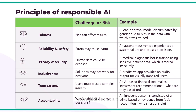Last but not least, we have accountability. When something goes wrong in AI systems, who is liable? For example, if an innocent person is convicted of a crime based on facial recognition evidence, who is responsible? Similarly, if an autonomous vehicle meets with an accident, is it the car company that designed the vehicle, the developer who created the AI application code, or the country that allowed the application to be used? Who is accountable is one of the most important principles of responsible AI.